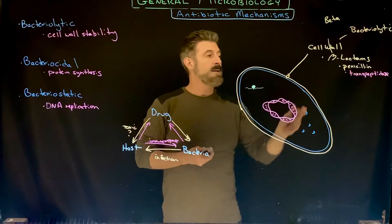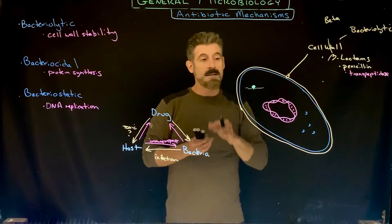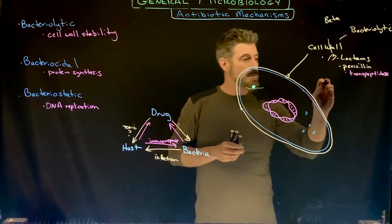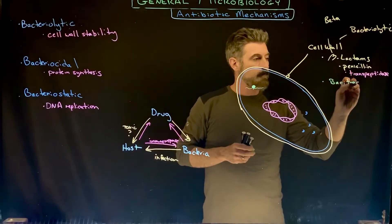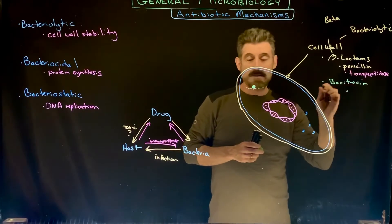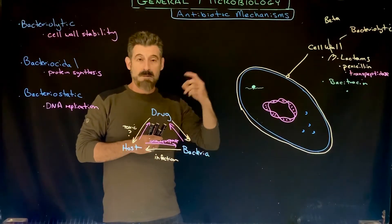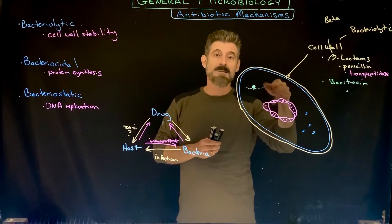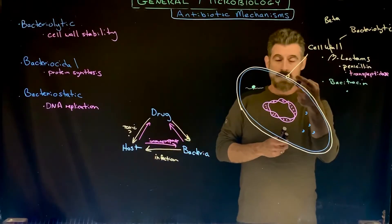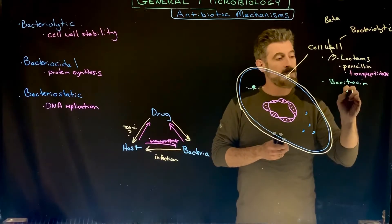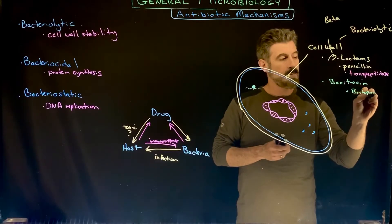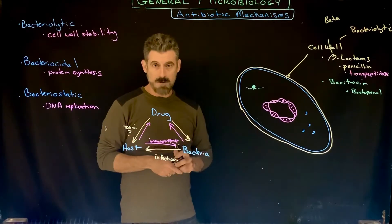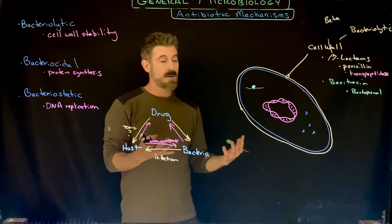Another group of antibiotics that affect the cell wall can do so in slightly different ways. For example, we have bacitracin. Bacitracin is going to affect the ability of the NAMs and NAGs to be transported from the cytoplasm out into the environment where they're going to be added to the cell wall. It binds to that bactoprenol, and then you can't provide any new NAMs and NAGs, so you can't build any new cell wall.